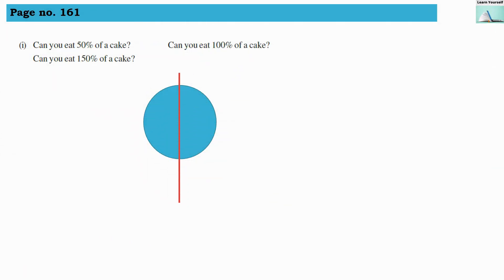Think, discuss and write, page number 161. So question is: can you eat 50% of cake? Can you eat 100% of cake? And can you eat 150% of cake? So we are denoting this question number A, B, and C like this.